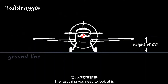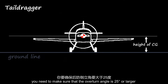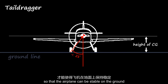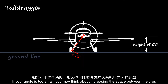The last thing to check is the overturn angle — it should be 25 degrees or larger so the airplane can be stable on the ground. If your angle is too small, you may need to consider increasing the spacing between the tires.